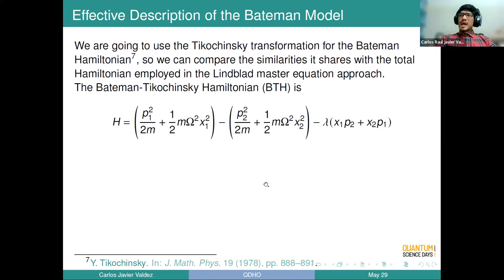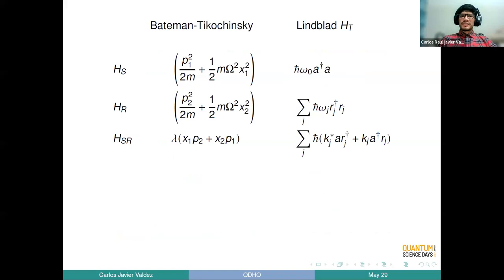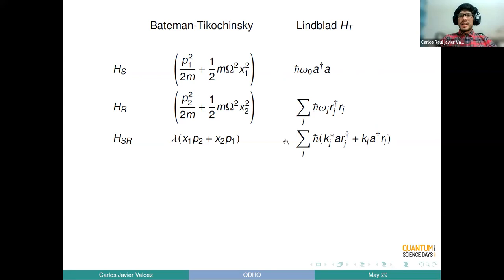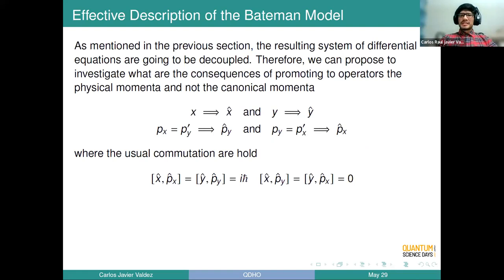Going back to study the Bateman-Tikochinski Hamiltonian — just a transformation of the Bateman Hamiltonian shown before — we obtain the following Hamiltonian. I like this formulation because we can see a direct comparison between this Hamiltonian and the total Hamiltonian using the Lindblad approach: the system of interest is a harmonic oscillator Hamiltonian, the reservoir is a collection of harmonic oscillators for the right-hand and left-hand sides, and there is the interaction. I feel uncomfortable using canonical quantization because the canonical momentum depends on the opposite variables.